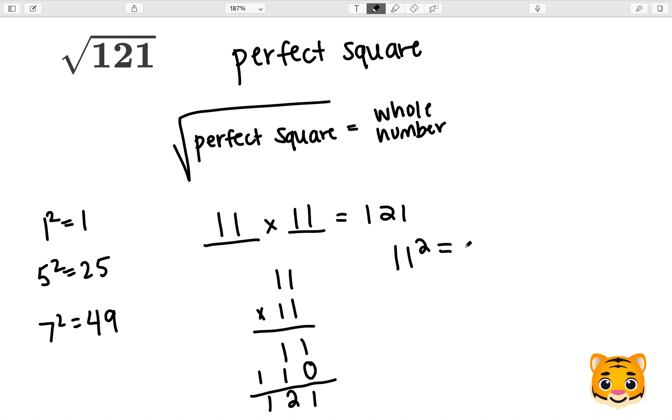Therefore, 11 squared is 121, and then we can rewrite the square root of 121 as simply 11. This is our final answer. We don't need to do any further simplification or approximation.